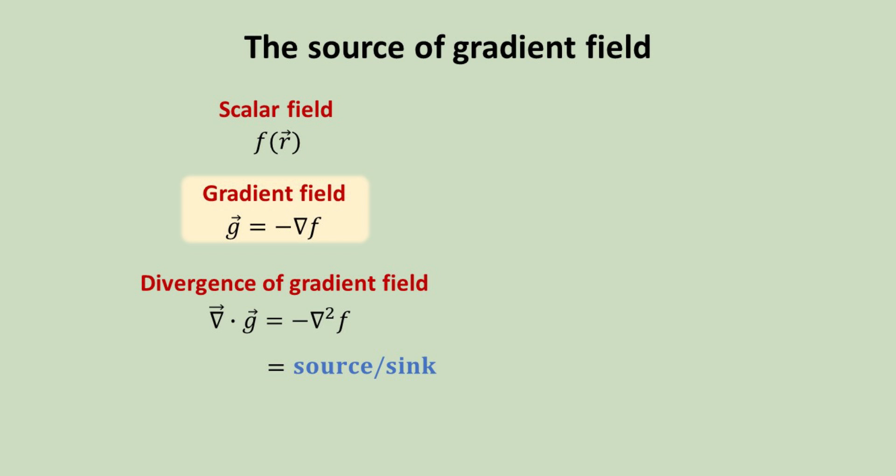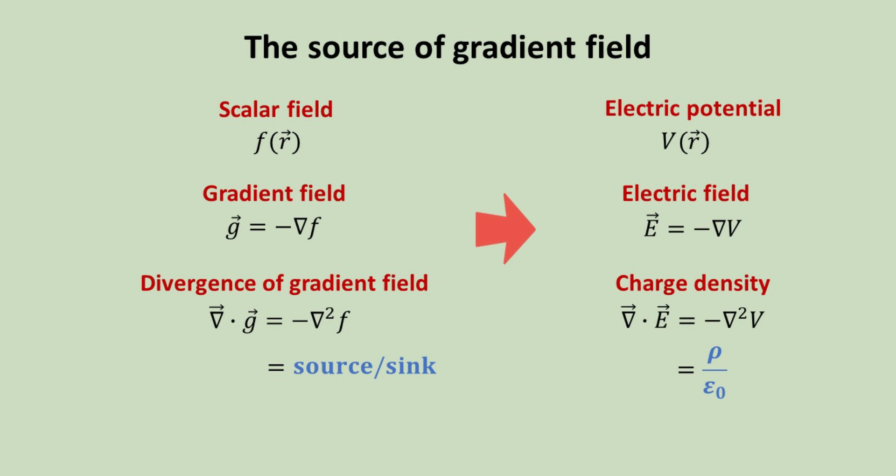Without loss of generality, we have included a minus sign in our definition of the gradient field. This then allows us to make direct analogy to electrostatics, where the electric potential is the scalar field, and the electric field is the gradient field. In this case, the divergence of the electric field would then yield us the charge density. In other words, the source and sinks in our gradient field is analogous to the positive and negative charges in electrostatics.